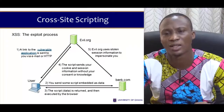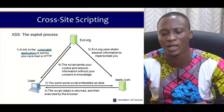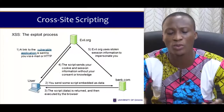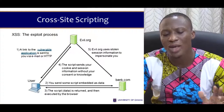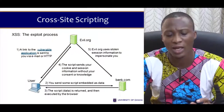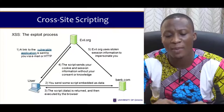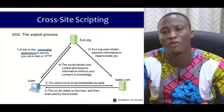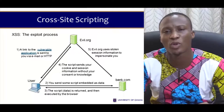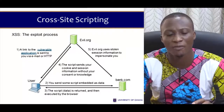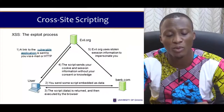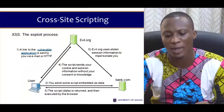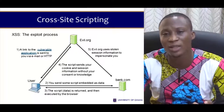Say you are accessing your bank account at bank.com. Once you send a command to your bank, your bank also sends you a response in the form of data. Once this data arrives in the user's browser, a message is automatically sent to evo.org — the script sends your cookies and session information without your consent to evo.com. That phishing site then uses your information to impersonate you to the bank. This is how cross-site scripting is typically executed.